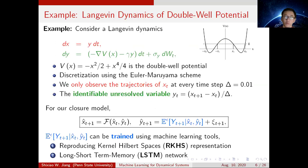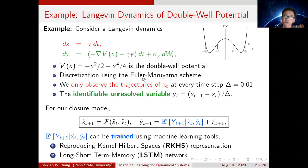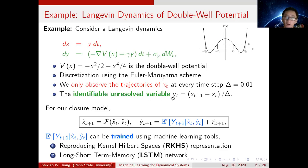Here is an example. We consider long-term dynamics with a double-well potential. V(X) is given in this form — we see a double-well from the figure. The system is discretized using the Euler-Maruyama scheme. We observe the trajectory of X(T) at every time step delta equals 0.01. From the discretization of the first equation, we can extract the dataset for Y(T) by the formula X(T+1) minus X(T) divided by delta. That's why Y(T) is called the identifiable unresolved variable, since its dataset can be identified from the resolved variable X(T).